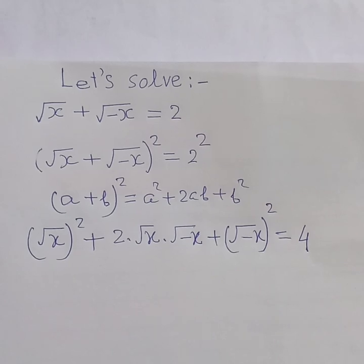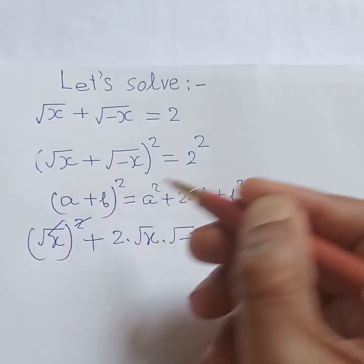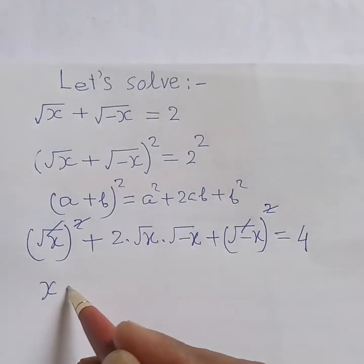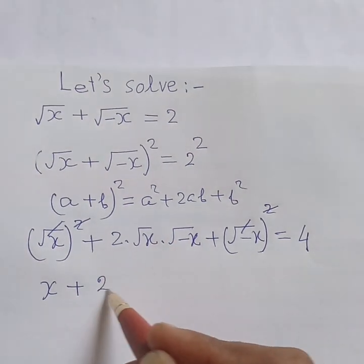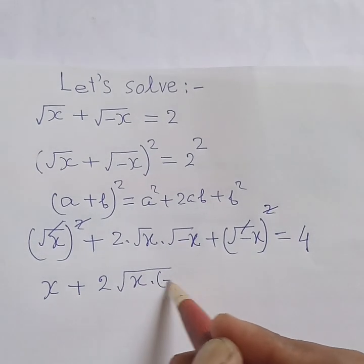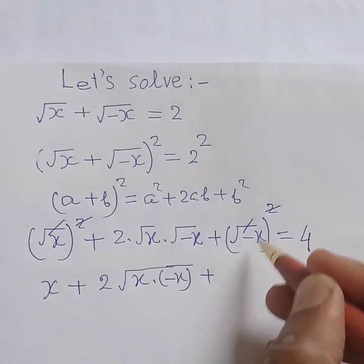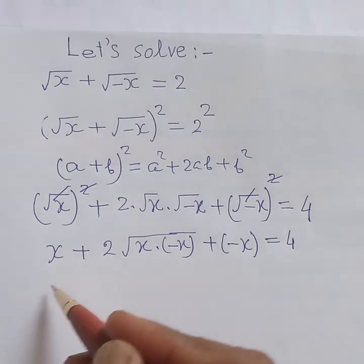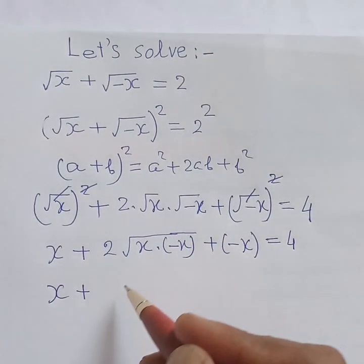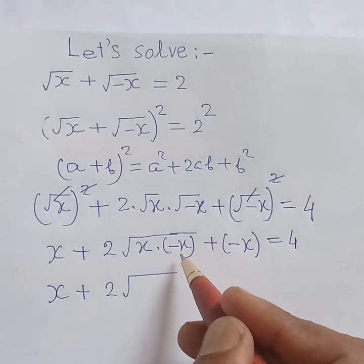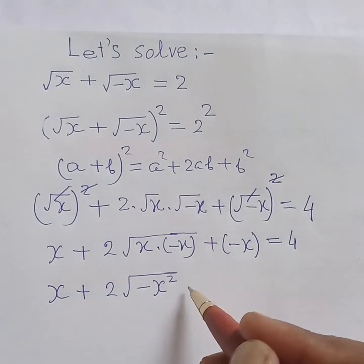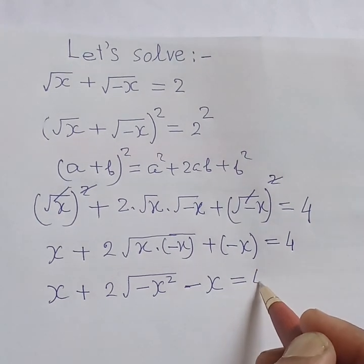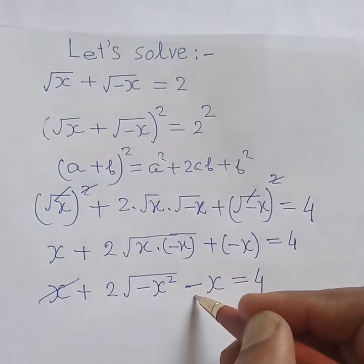Next step: the square root and square cancel here, and also here. So it will be x plus twice root of x into minus x, plus minus x, equals 4. That gives x plus twice root of minus x squared, minus x equals 4. This plus x and minus x cancel.